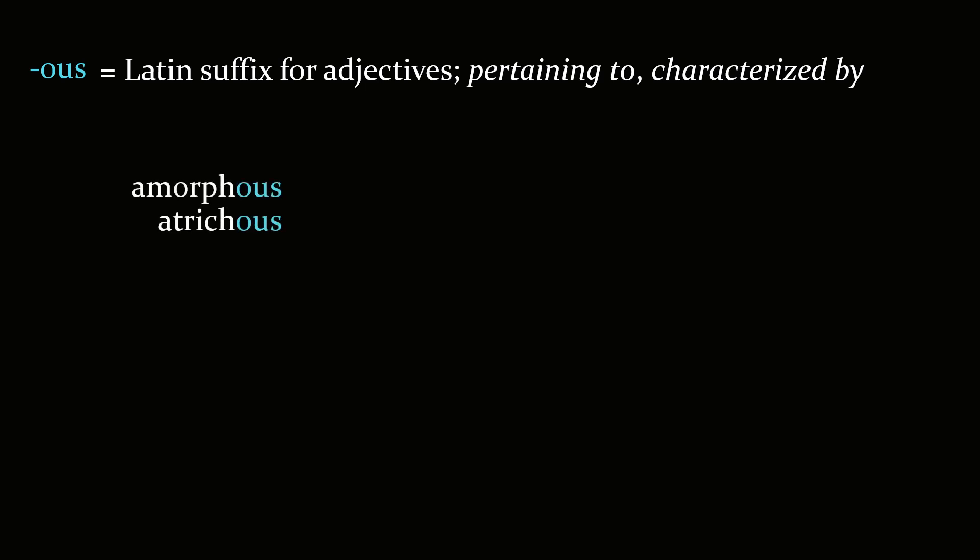Next we have -ous, a Latin suffix for adjectives meaning pertaining to or characterized by, like amorphous, atricus which has to do with a lack of hair, pyogenes. Pyo is the Greek word for pus and gen means causing or birth, and adipogenes which is a word you probably have never seen before. There are many other -ous words like generous and gracious and spacious, and we could go on and on but there simply is not that much time.